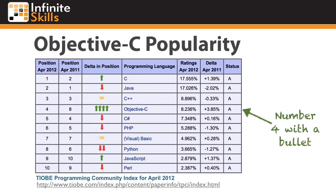According to the most recent Tiobe Programming Community Index, which ranks the popularity of a variety of programming languages, Objective-C is now ranked number 4, only behind C, Java, and C++. Pretty amazing.